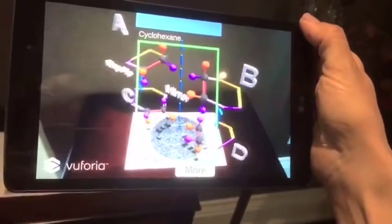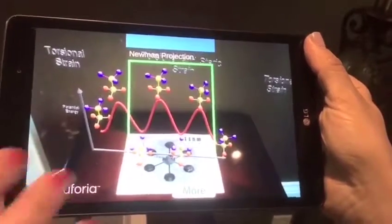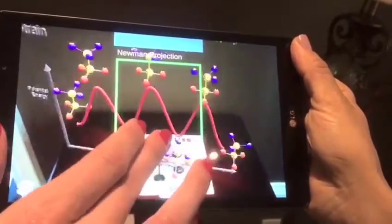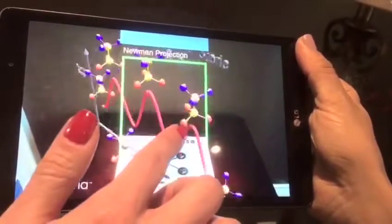This next augmented reality is the Newman projection of a butane molecule, and you can see the different conformations along rotation around the carbon-carbon bond and the full energy diagram that is created.